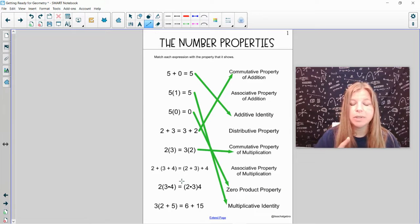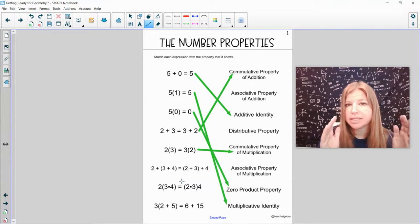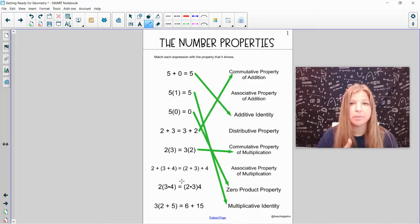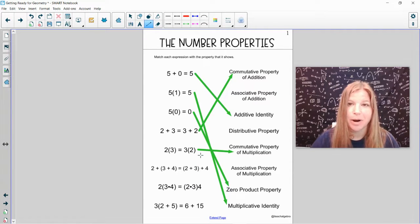The next one, 2 plus and then in parentheses 3 plus 4 equals 2 plus 3 in parentheses plus 4. Now, the order of my numbers did not change. 2, 3, 4 is still 2, 3, 4. But the grouping symbols change their spots. It's like what got associated with each other. In the first side on the left, 3 plus 4 got associated with each other, got grouped together. And on the right-hand side, 2 plus 3 was associated or grouped together. When the order doesn't change, but the grouping symbols do for addition and multiplication, because that's next, that is called the associative property. So this one here would be the associative property of addition.